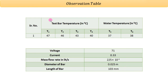To cool the metal rod, we supply water at a mass flow rate of 2.25 × 10⁻³ liters per second. The diameter of the metal bar is 0.025 m and the length of the bar is 103 mm. Both the diameter and length are provided by the manufacturer of the setup. Now we have the complete database to solve for thermal conductivity.